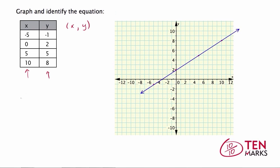Remember the slope-intercept form of a line: y equals mx plus b. We need to find b, which is the y-intercept — the point at which the line crosses the y-axis. When the line crosses the y-axis, the value of x is always 0. You can find the y-intercept using the graph or by looking at the table. Notice that when x equals 0, y equals 2. This is the y-intercept, so the value of b is 2.